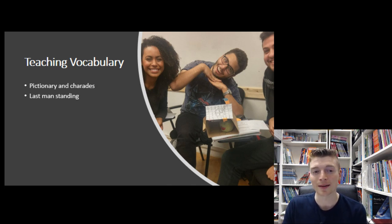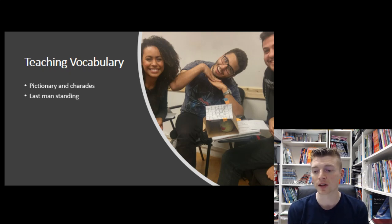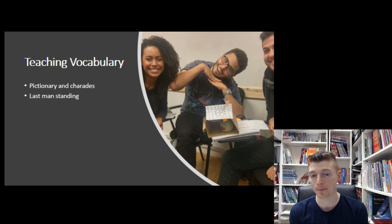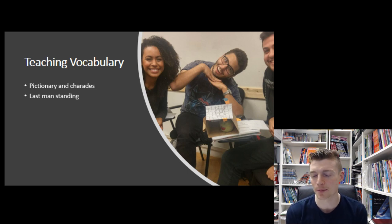Last Man Standing is another good way to make vocabulary more lively. Get all your students standing in a circle — this can be a great way to review vocabulary from a previous class. Students throw an object around; whoever catches it must think of a word from a particular category. If a student can't think of a word or repeats one already said, they sit down. The winner is the last student standing. There's an element of competitiveness that can really help make a lesson more dynamic.